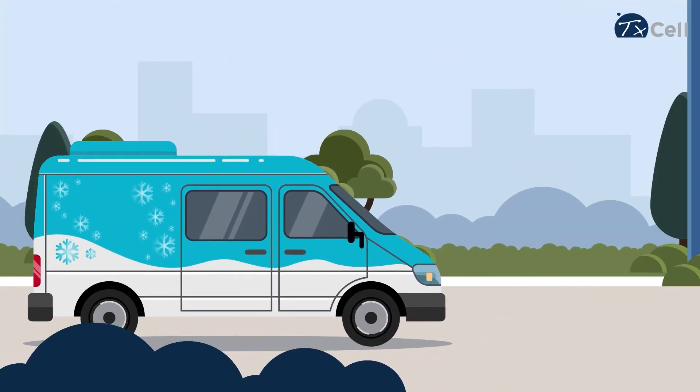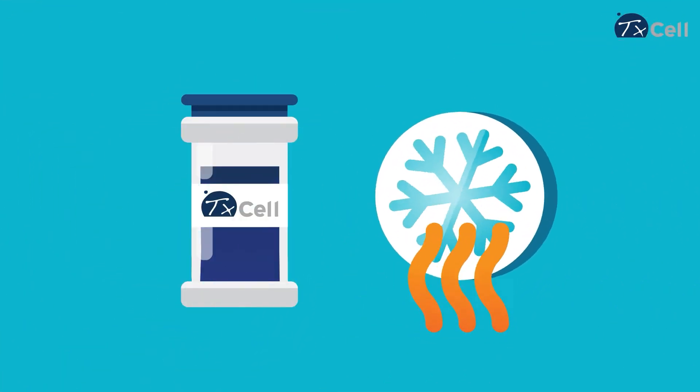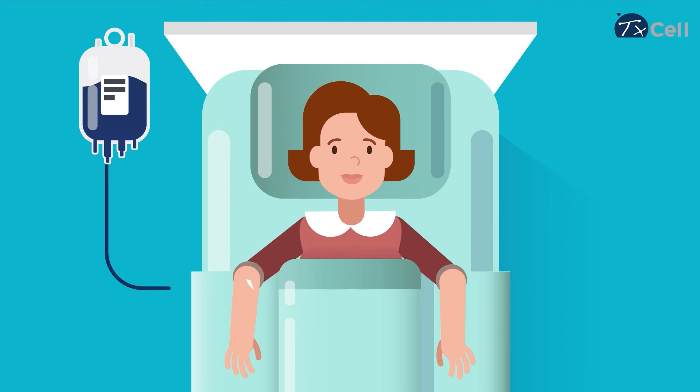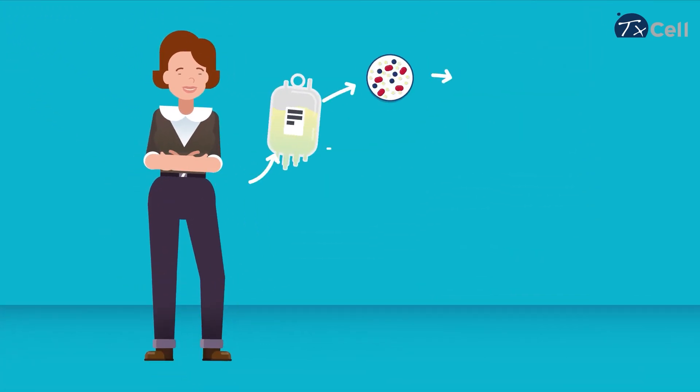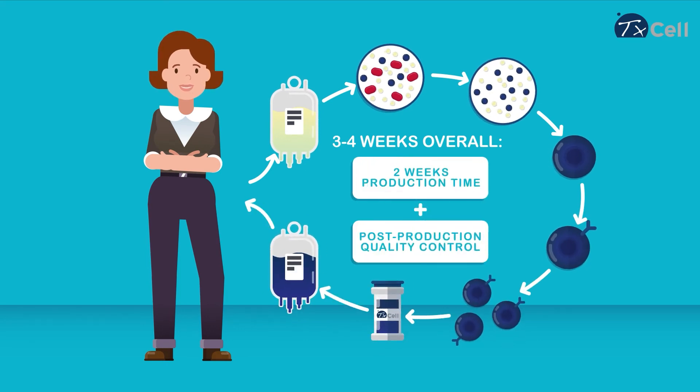A few vials of frozen product are then shipped back to the hospital. At the hospital, the drug is thawed before being injected intravenously into the patient's body. Overall, this process takes approximately three to four weeks of vein-to-vein, including two weeks of actual production time.